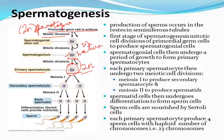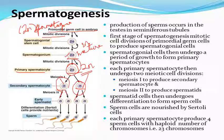Now meiosis I begins. These primary spermatocyte cells will undergo reductional division. The chromosome number reduces from 2N to N, producing 2 secondary spermatocytes. These early spermatocytes are somewhat larger in structure.